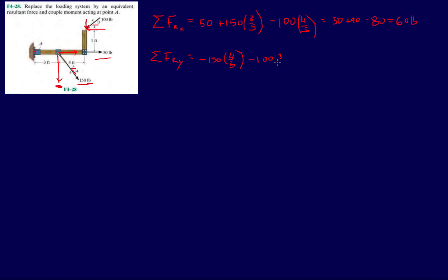Minus 150 divided by 5 is 30, minus 30 times 4 is minus 120, minus 60, which is minus 180 pounds.